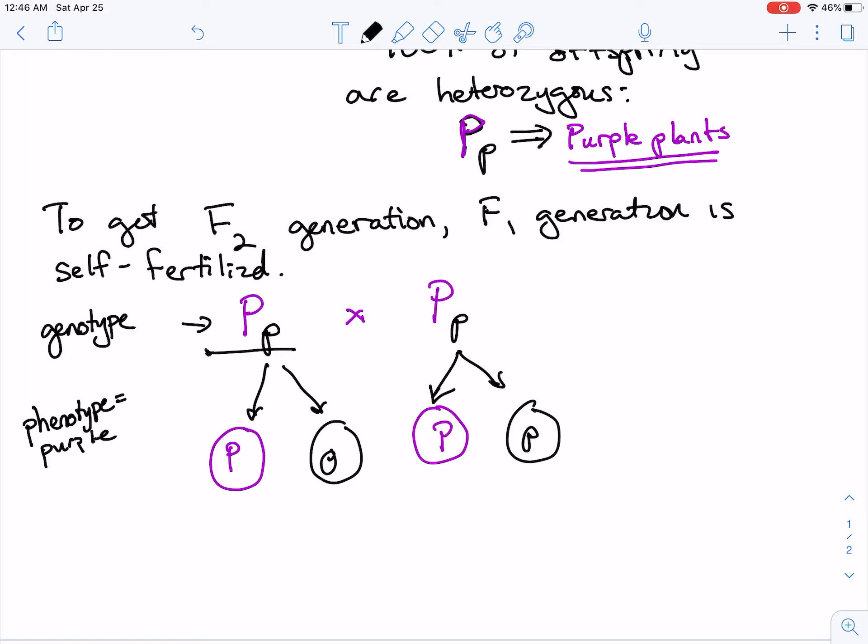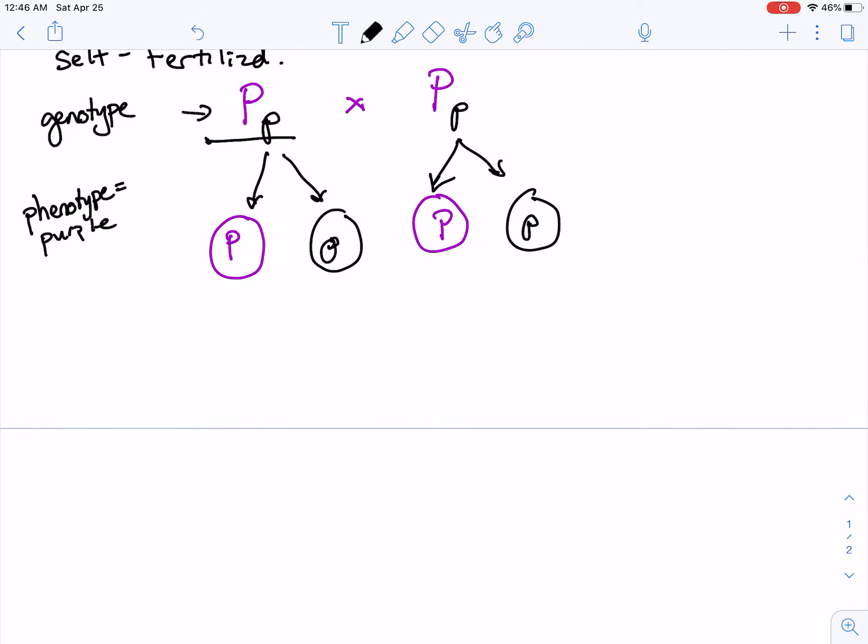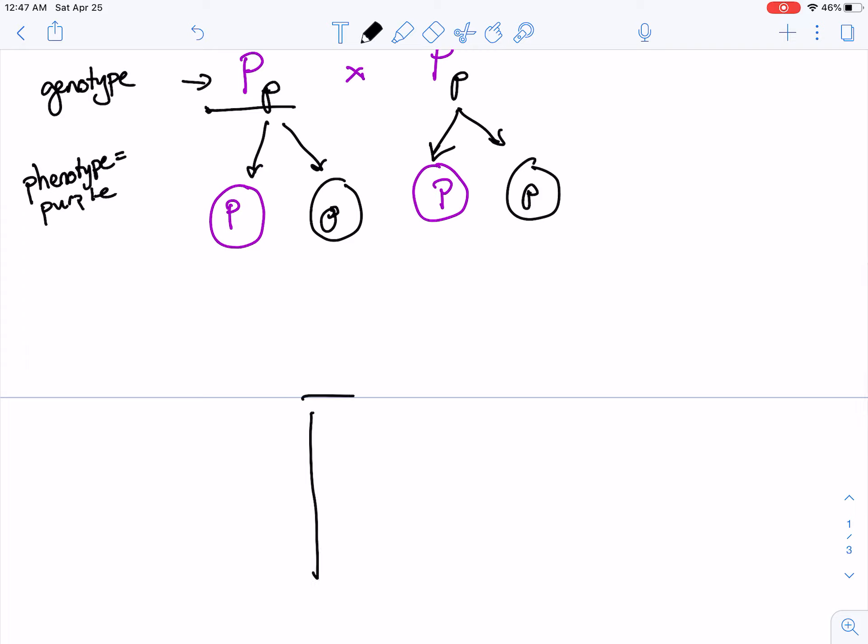So we can make a big P here, a big P on this side, and a little p over here, and a little p over here. So again, I just like to think I'm separating these homologs out into different cells, and that's how I have these possible gametes. All right, so let's do another Punnett square and cross these together.